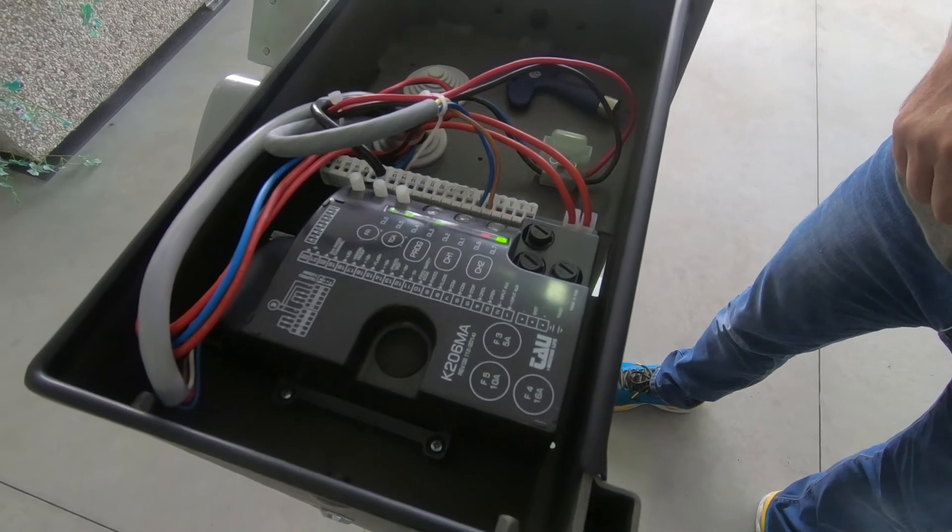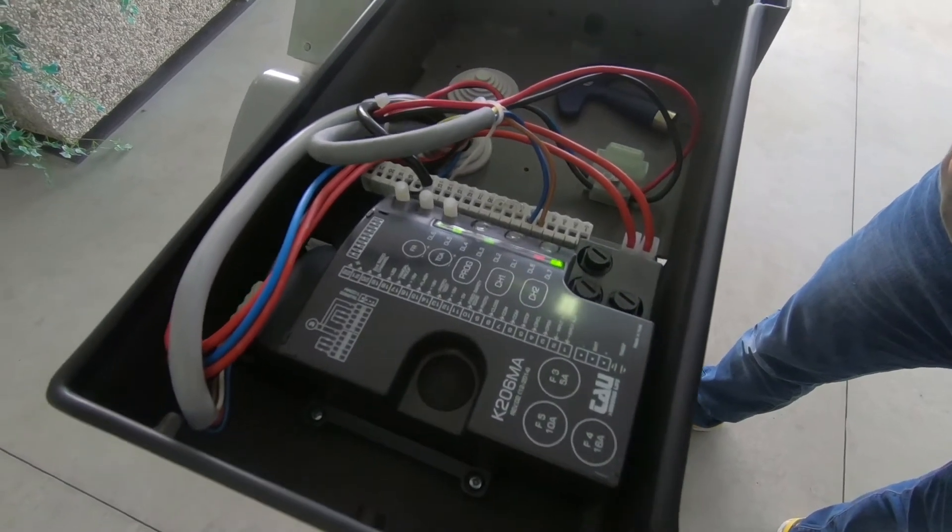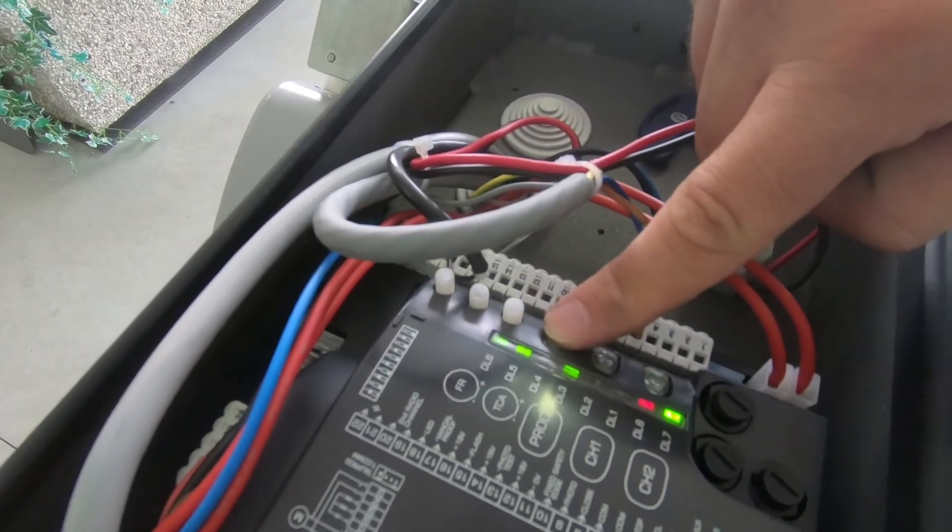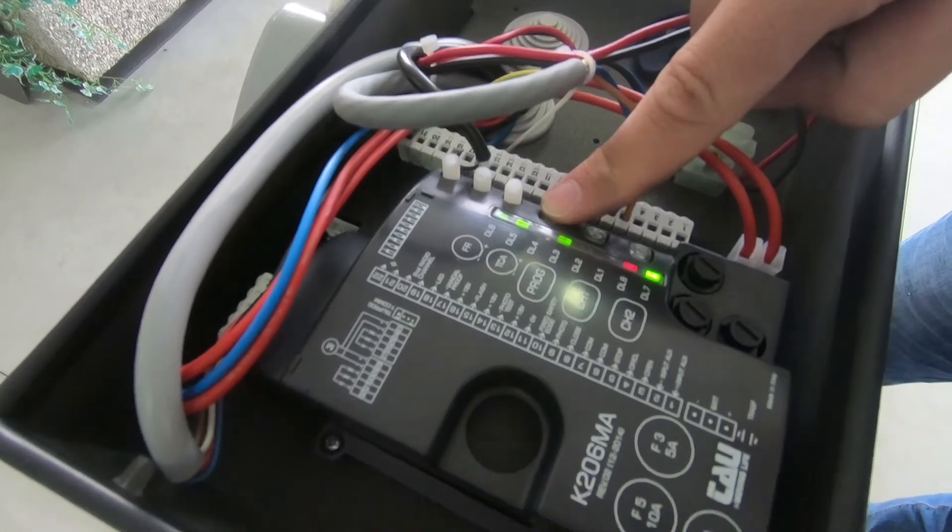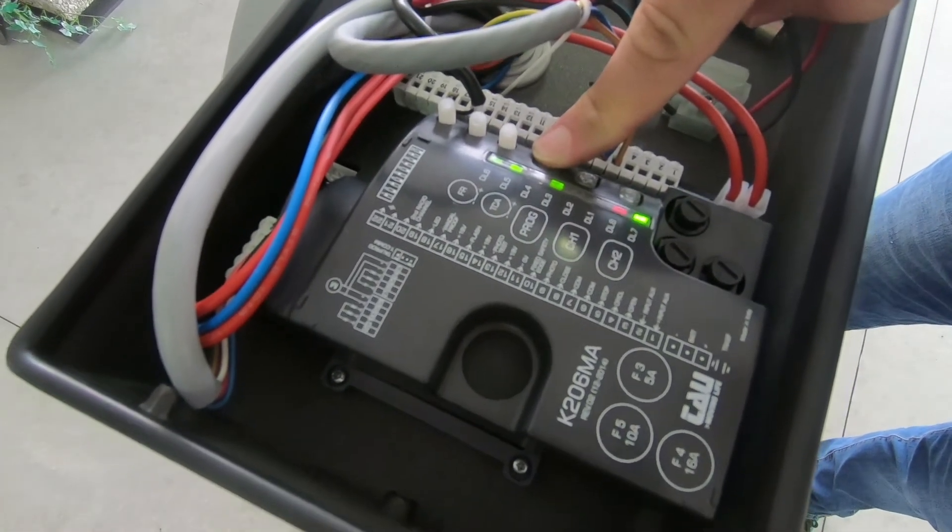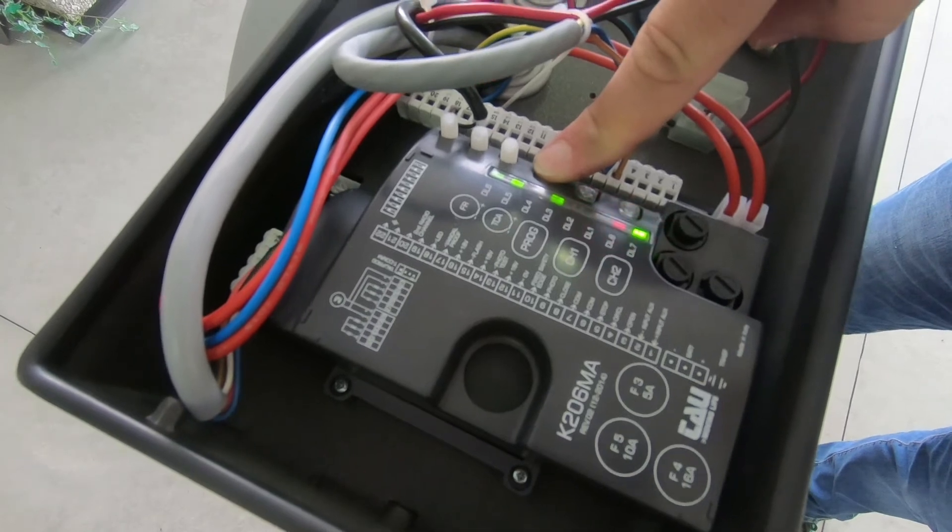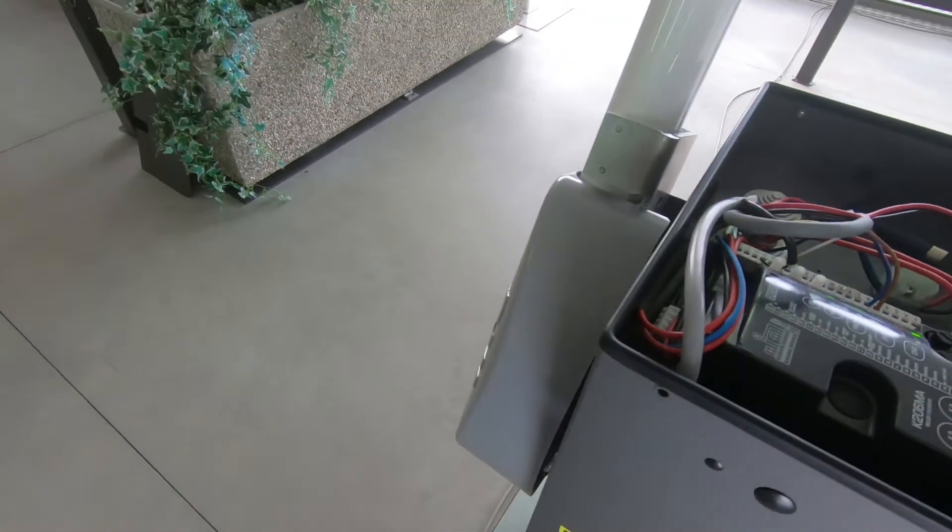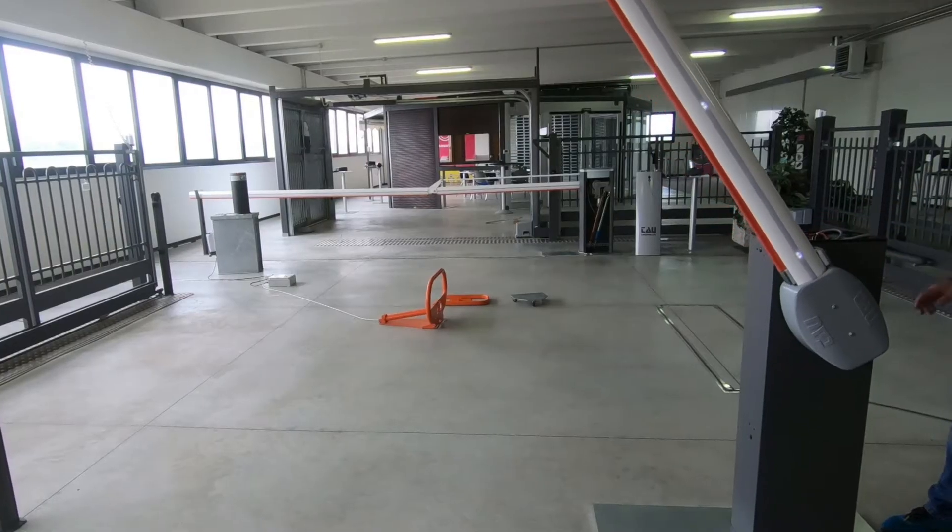After powering up the electrical panel of the barrier, we proceed with the programming of the stroke by pressing for 5 seconds the prog key and starting the memory procedure. The boom will slowly perform an opening to find the maximum limit switch point.